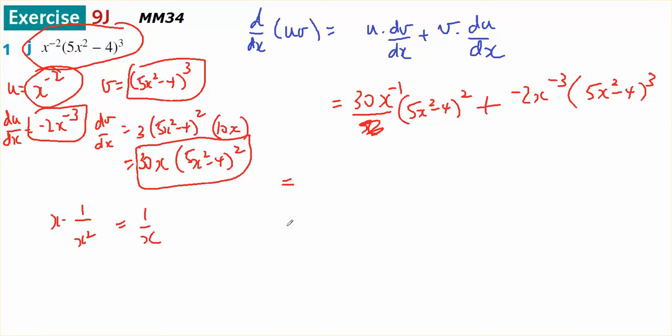Taking out common factors, I've got a 2 that can come out. I've got x to the negative 1 and x to the negative 3. Therefore, x to the negative 3 is the lowest common factor because negative 3 is smaller than negative 1. And 5x squared minus 4 to the power of 2 is the largest common factor that can come out.